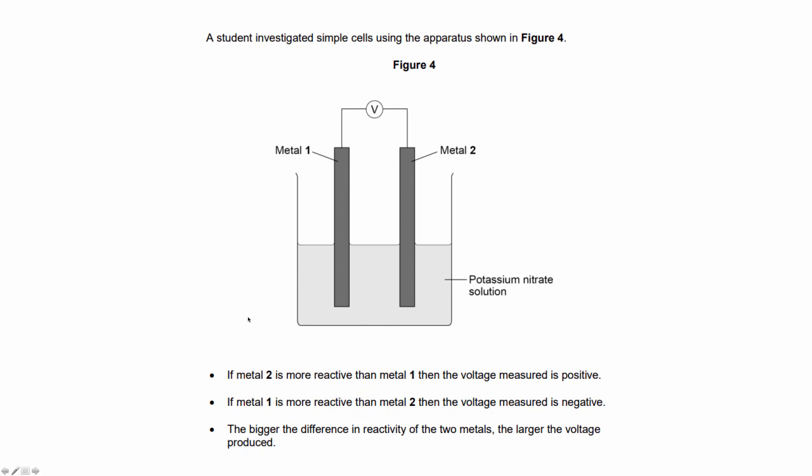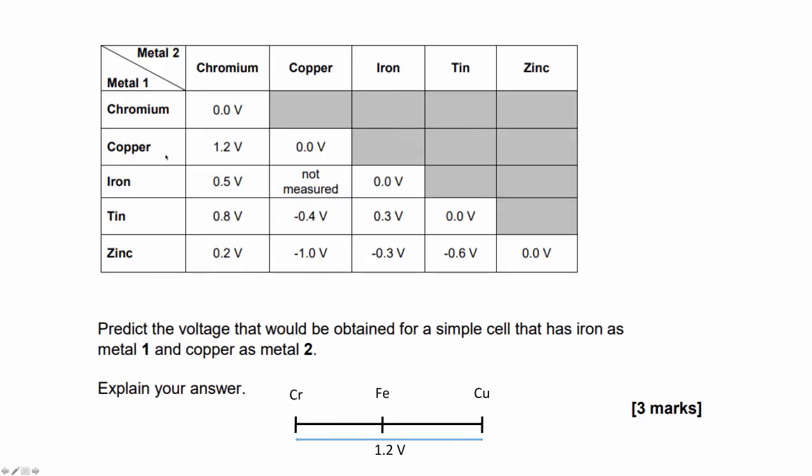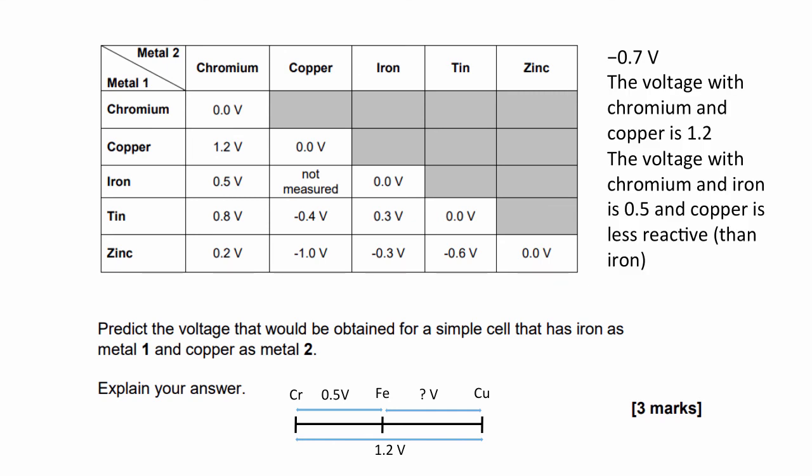Here's another question from a past paper. We have two metals in an electrolyte with a high resistance voltmeter connecting them. The question states that if metal two is more reactive than metal one, the voltage measured will be positive. If metal one is more reactive than metal two, the voltage will be negative. The bigger the difference in reactivity, the larger the voltage. Between copper and chromium is 1.2 volts, and between chromium and iron is 0.5 volts. The question asks for the difference between iron and copper. The difference will be 0.7 volts. But because copper is the more reactive metal and iron is metal one, it will be negative 0.7 volts.